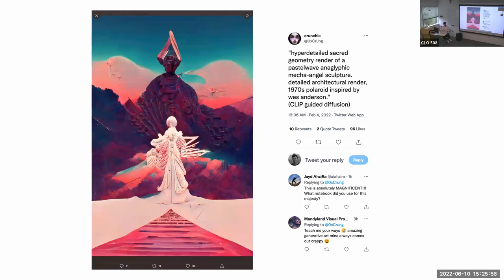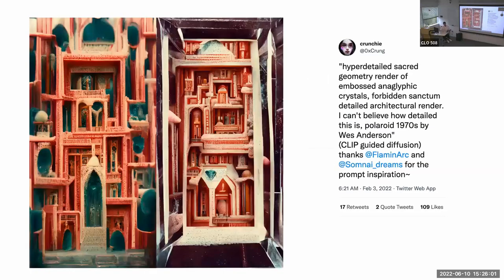So, this one says that hyper-detailed sacred geometry render of a pastel wave on a glyphic mecha angel sculptural aura, clip-guided diffusion. And clip-guided diffusion is an AI-based data-driven generative model that produces the images. And now it became a kind of growing art form, which started relatively recently. So, it looks better than the things we saw before. And now everyone is excited about this is art. So, how do we make sense of this?